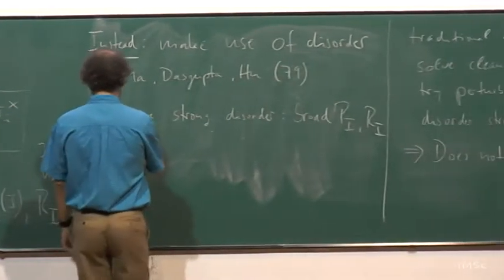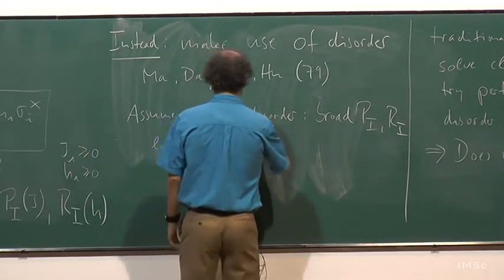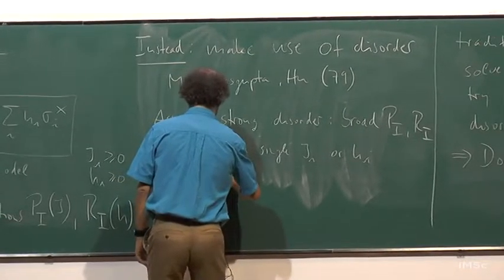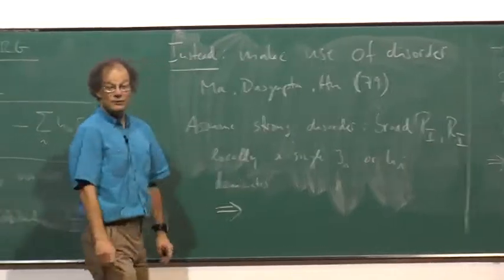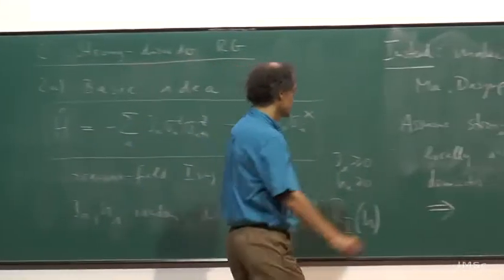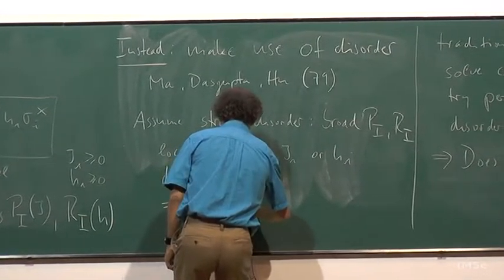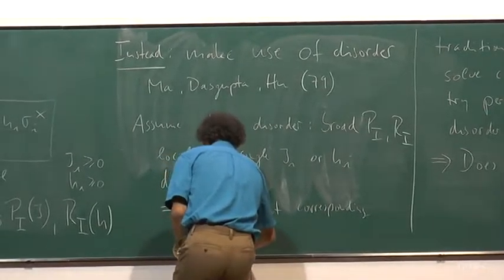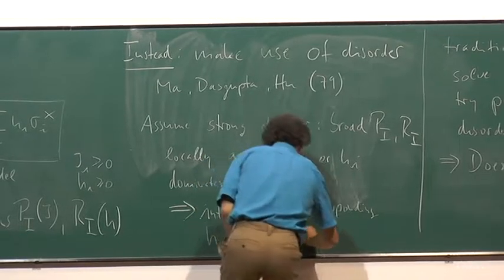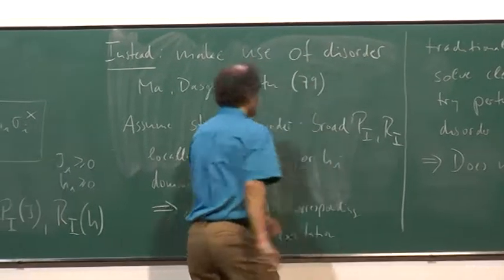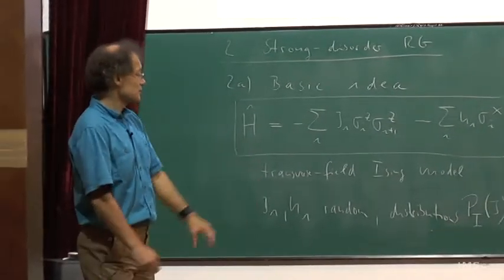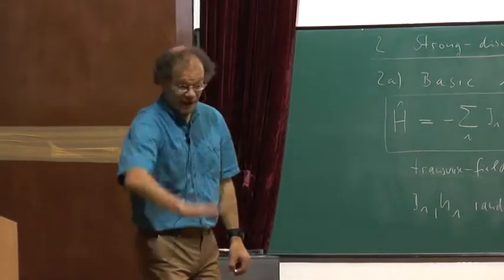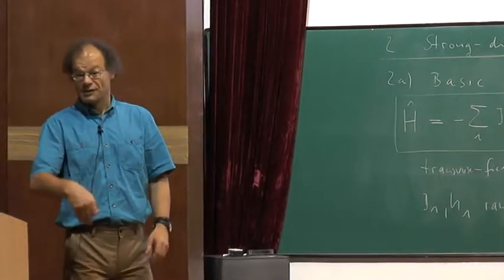So assuming strong disorder means that locally a single J_i or a single H_i dominates. We integrate out the corresponding high-energy excitation. This renormalizes the couplings in the neighborhood of that strong site, giving us a new chain, and then we iterate — watching the energy scale flow down — to see what the chain does under this RG procedure. That's the basic idea, so now let's actually do it.